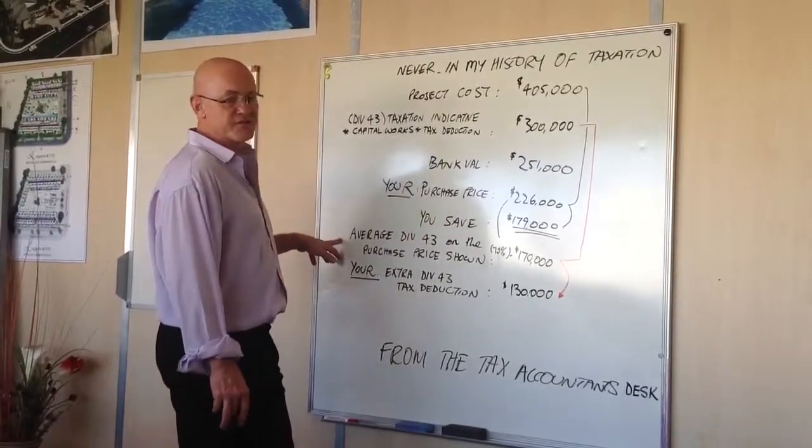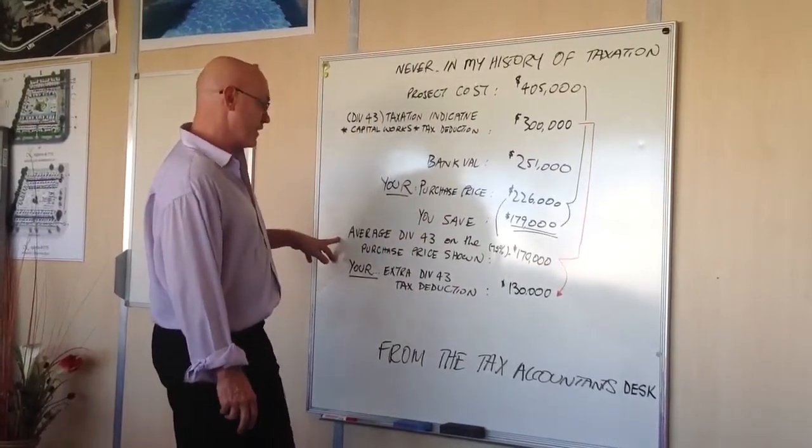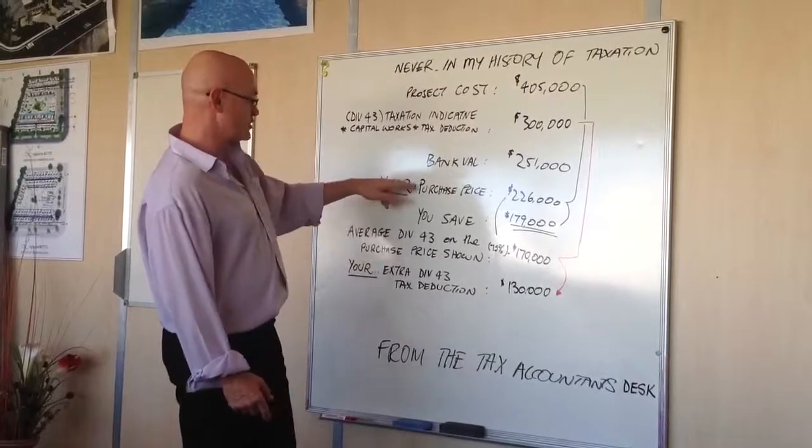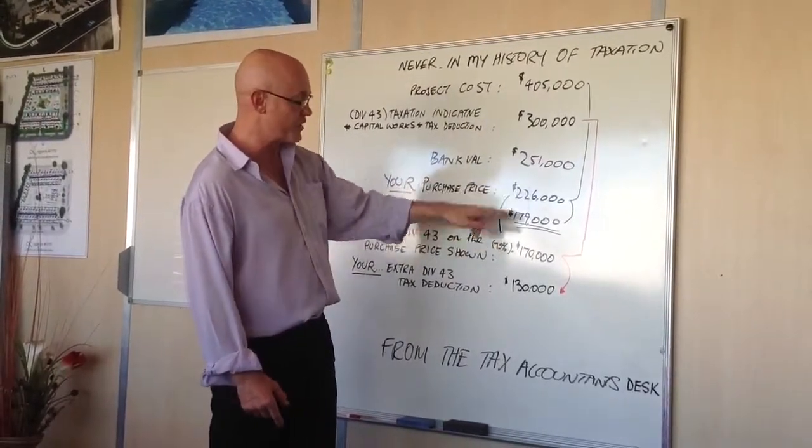The actual average Division 43 amount claimable on such a purchase price is generally 75% of the purchase price.